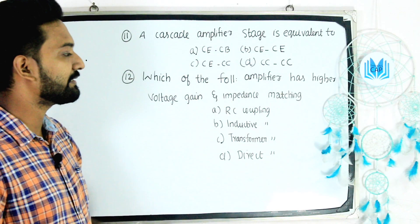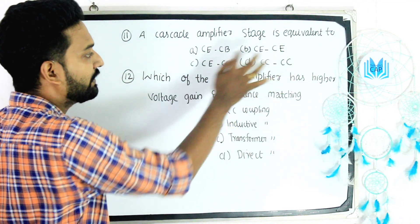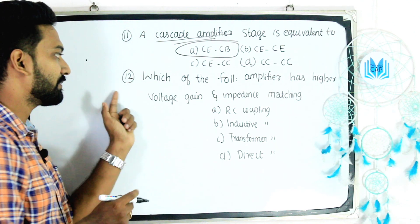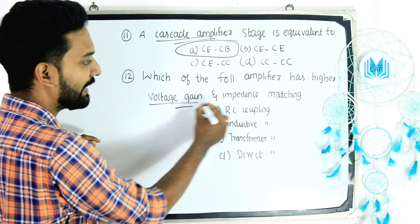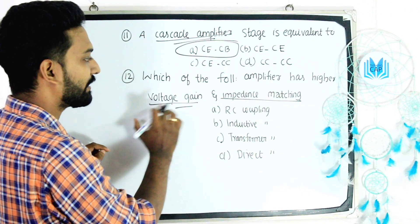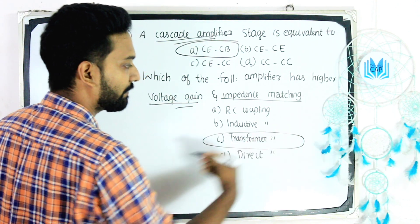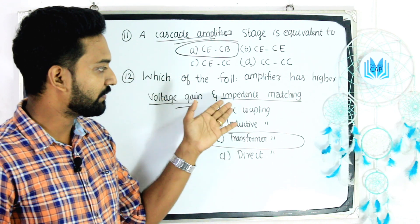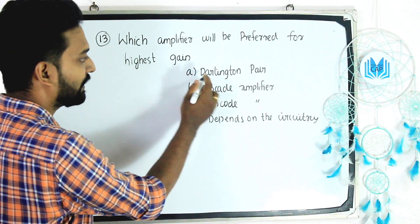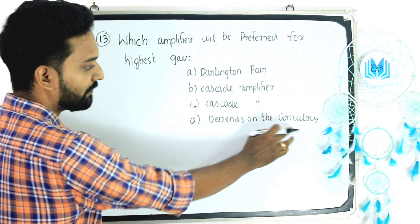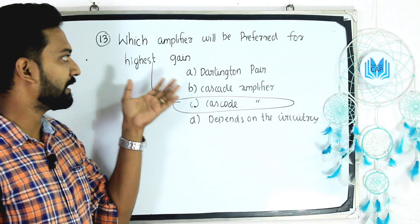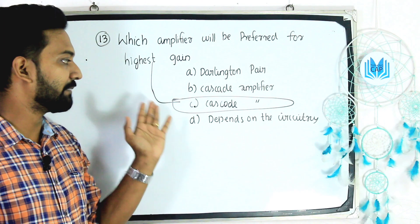Question 9: A cascode amplifier stage is equivalent to common emitter to common base — that is the answer. Question 10: Which amplifier has higher voltage gain and impedance matching? RC coupling, inductive coupling, transformer coupling, or direct coupling. And which amplifier will be preferred for the highest gain? The answer is the cascode amplifier — the cascode amplifier is preferred for the highest gain.